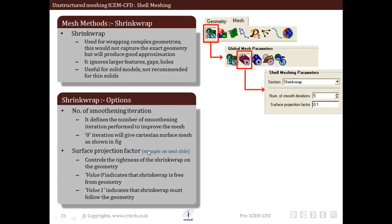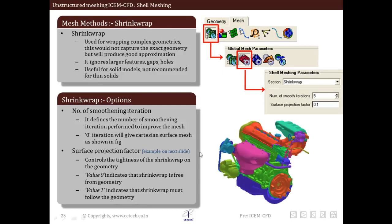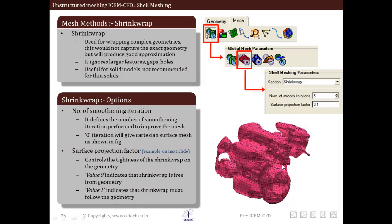The second option is surface projection factor. It controls the tightness of the shrink wrap on the geometry. A value of 0 indicates the shrink wrap is free from geometry; a value of 1 indicates the shrink wrap must follow the geometry. The number of smoothening iterations defines how smooth or continuous the mesh is, while the surface projection factor defines how much the mesh is attached to the particular geometry. The mesh wraps around the geometry without capturing detailed features, which is good for solid modeling and approximately modeling flow around bluff bodies.